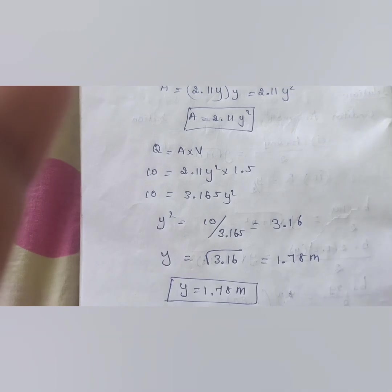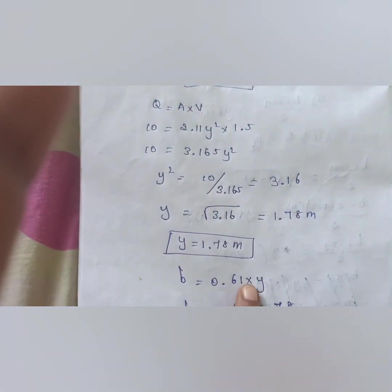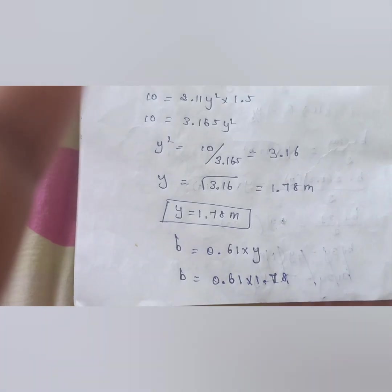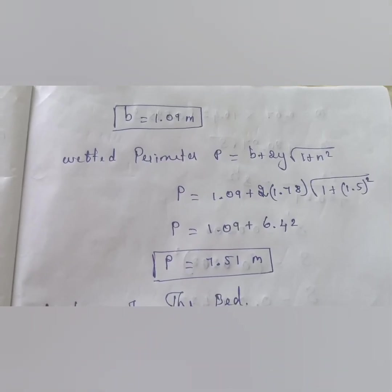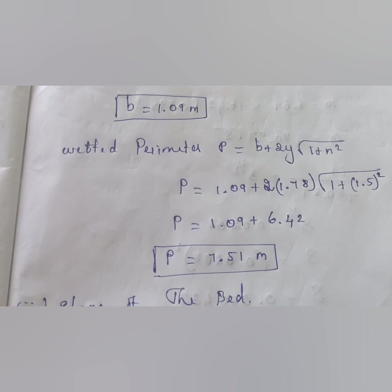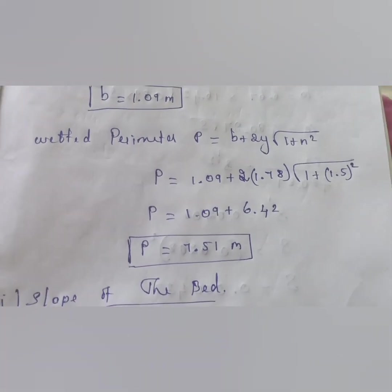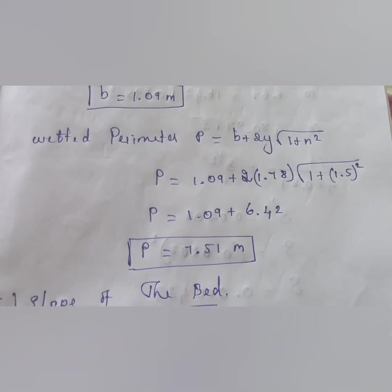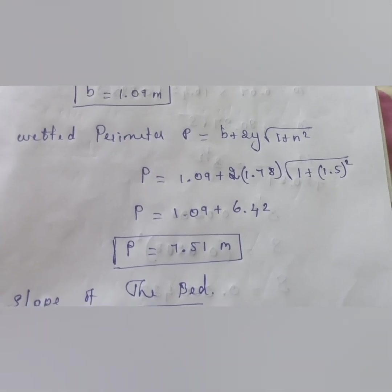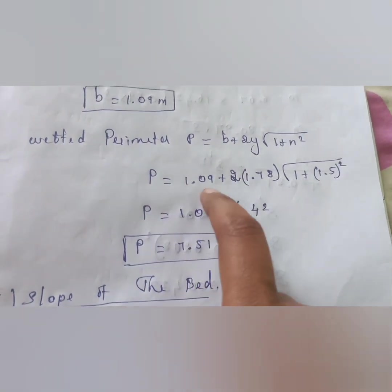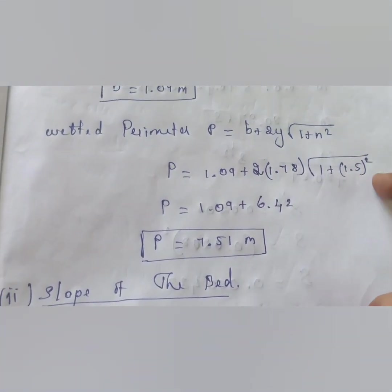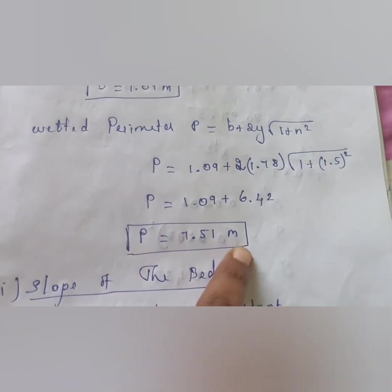The depth y = 1.78 m. The breadth b = 0.61y = 0.61 × 1.78 = 1.09 m. Now calculating the wetted perimeter: P = b + 2y × √(1 + n²) = 1.09 + 2 × 1.78 × √(1 + 1.5²). The wetted perimeter P = 7.51 m.